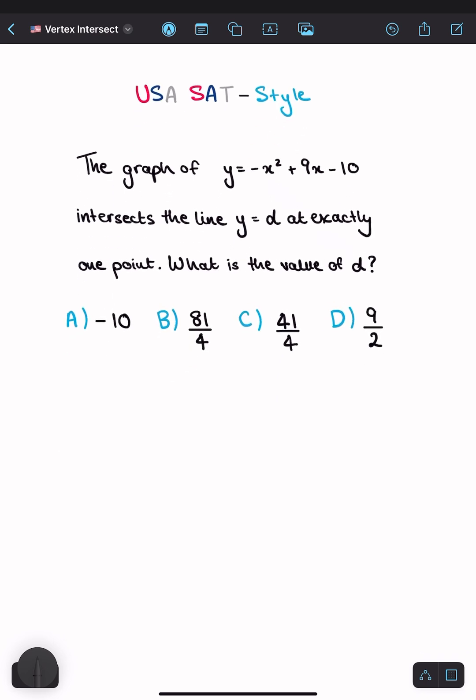The quadratic given is negative, which means the graph opens downward and intersects the line y = d. Since y = d is a horizontal line and they have one point of intersection, the only place they can intersect once is at the vertex.